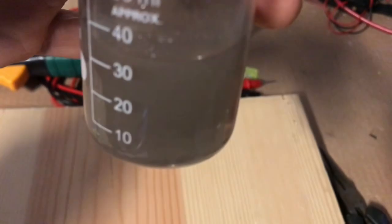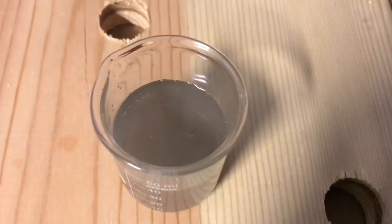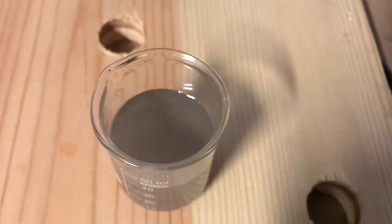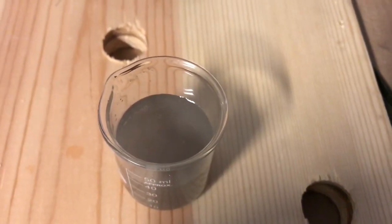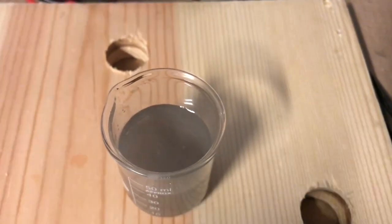You can see it's turning this kind of gray color which is due to the presence of aluminum oxide and gallium particles in the water. The gallium can actually be recovered and used again, and this is the basis for some kind of gallium aluminum hydrogen fuel cells.